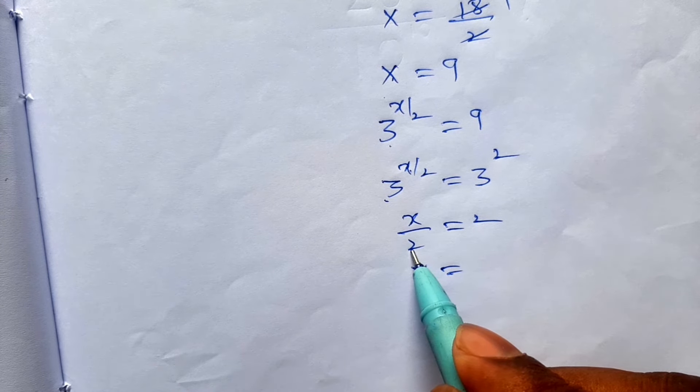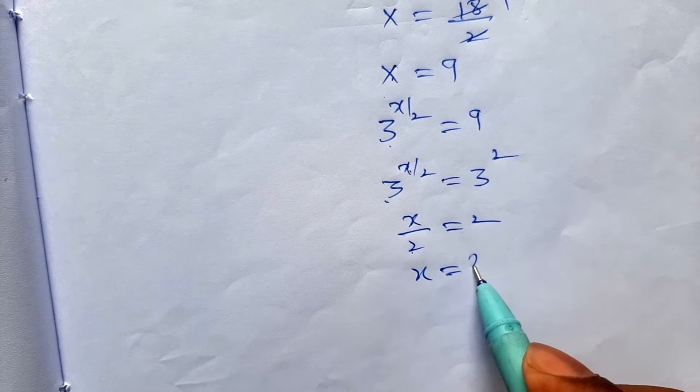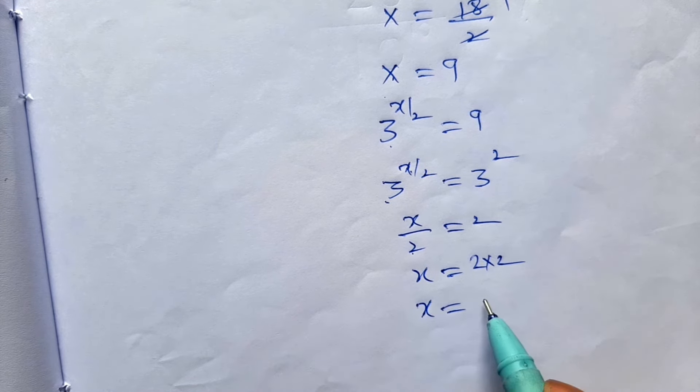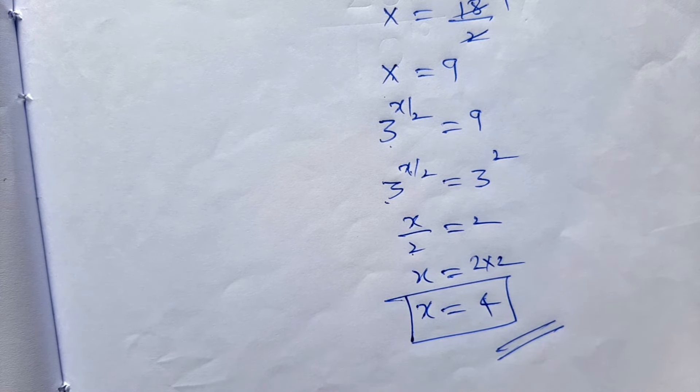x is equal to 2. If transpose to right side it becomes multiplied that value. After that, 2 into 2, x is equal to 4. This is the final value, x equal to 4.